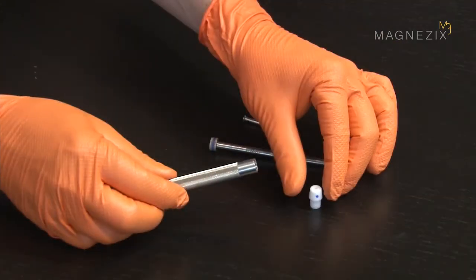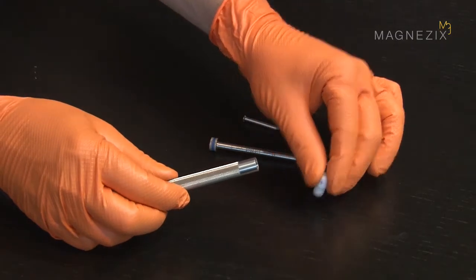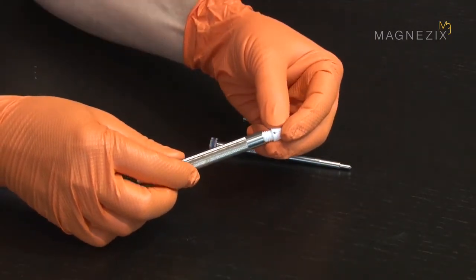To prepare the 3.2 mm impactor, the blue-coded impactor tip is screwed into the blue-coded impactor sleeve.